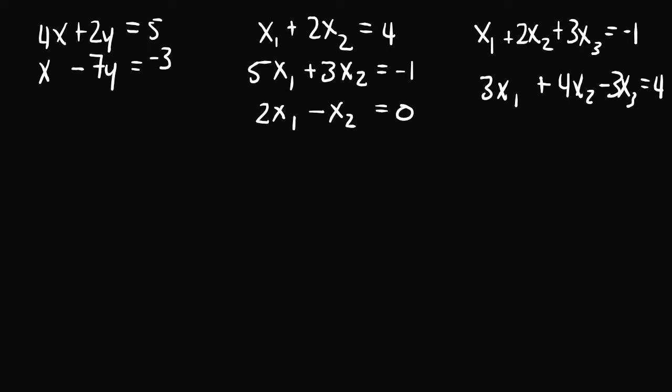I'm going to give each one of these systems a number: the first one called 1, the second one called 2, and the third one called 3. Notice that a system of linear equations may have one of three cases. The first case is that the number of unknowns equals the number of equations. In system 1, we only have two unknowns, x and y, and there are two equations.